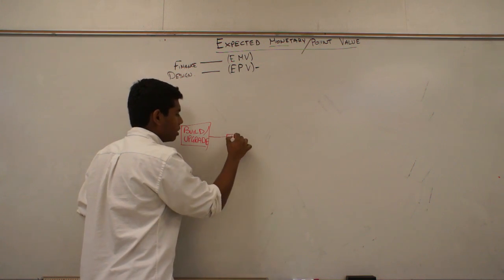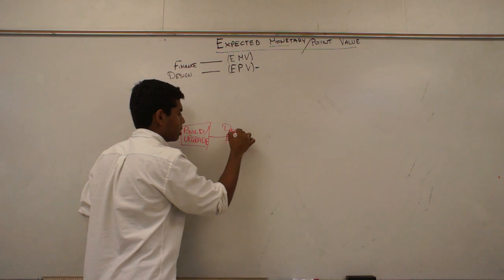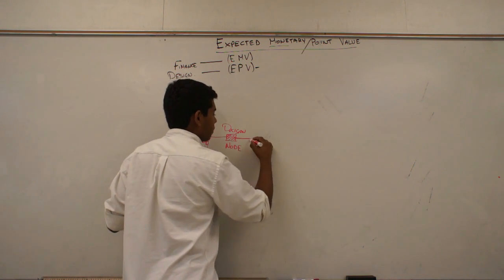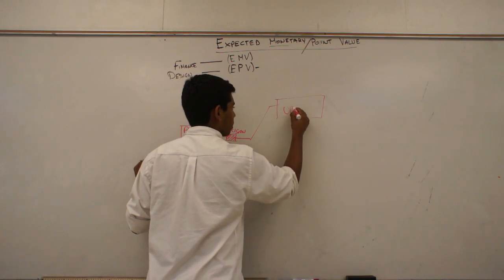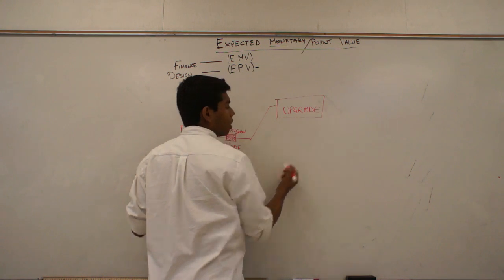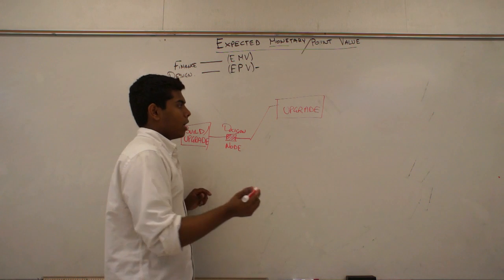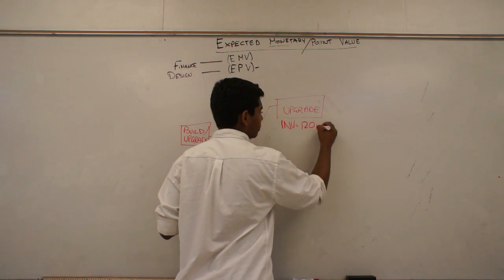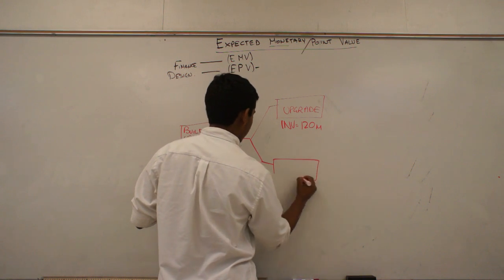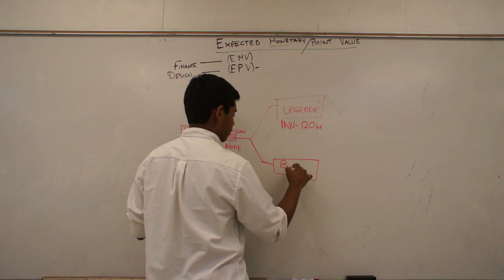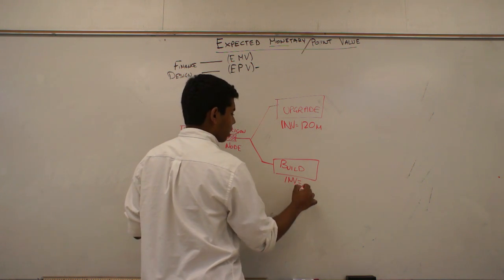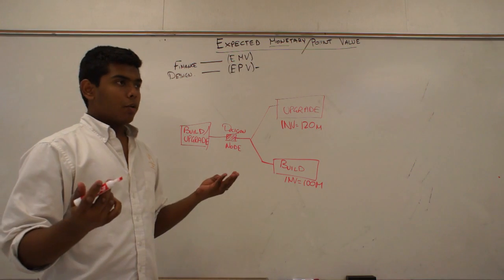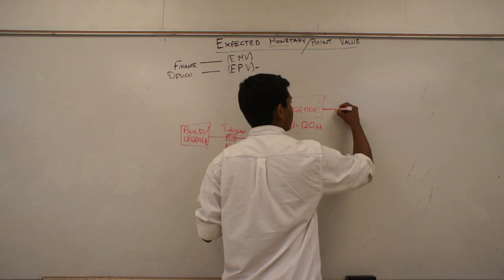In this decision, and this is a decision node, this here is a decision node, which is a box. We have a decision of either upgrading, which will cost us, let's say we're a company, and it will cost us an investment of $120 million. Whereas, this choice of either we could build a plant, will cost us an investment of around $100 million.